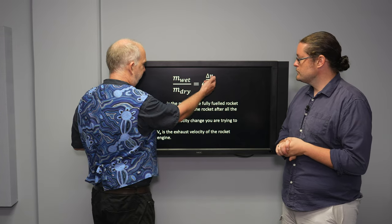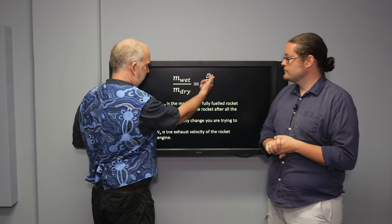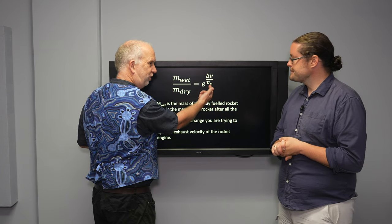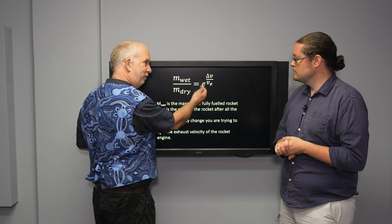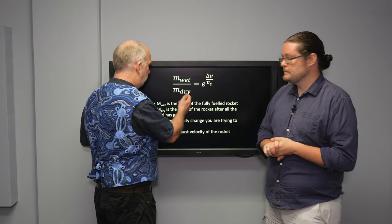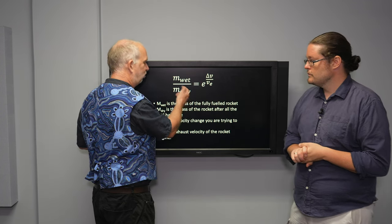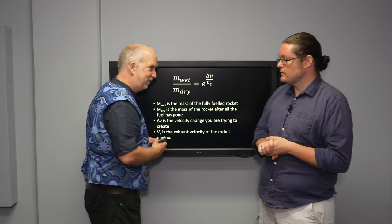So you can see that if you're trying to achieve a very large delta V, and you're throwing your fuel out slowly out the back, then this is going to be large. So exponential of that's going to be very large. Which means you need an awful lot of fuel to support a very small amount of dry mass.